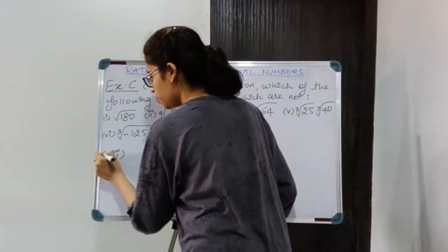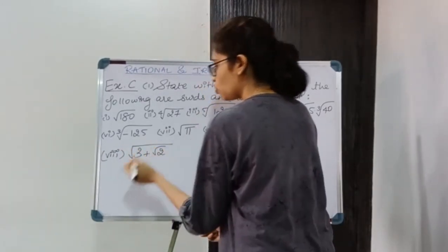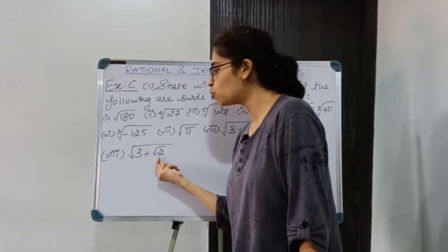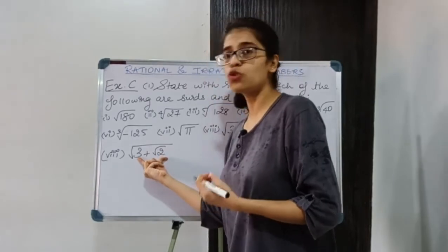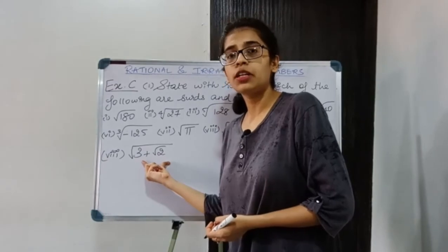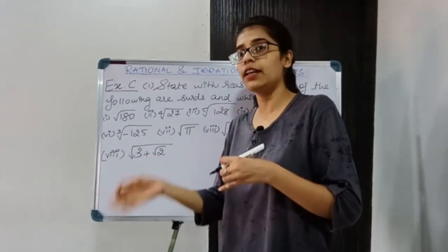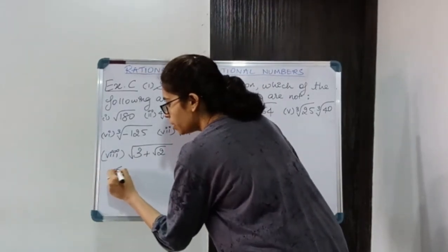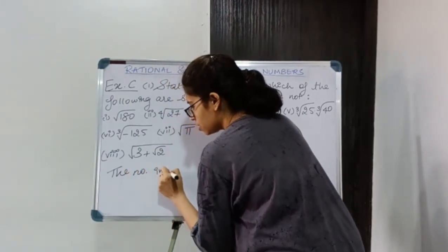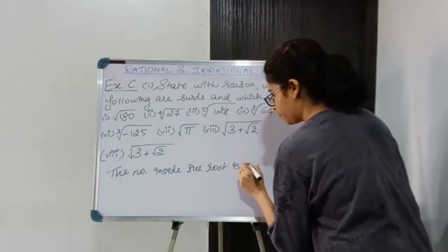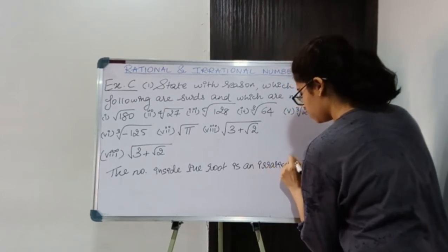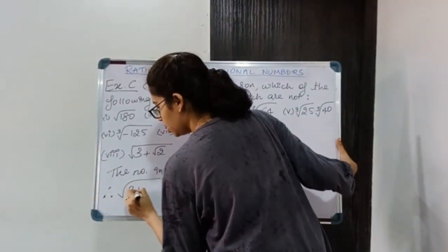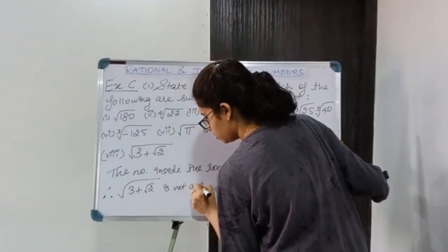Moving on to the last number: square root of (3 + √2). Now 3 is a rational number but √2 is an irrational number, so 3 + √2 is irrational. Therefore the expression is a square root of an irrational number. Since the number inside the root must be rational for it to be a surd, this is not a surd. The reason: the number inside the root is an irrational number. Therefore, √(3 + √2) is not a surd.